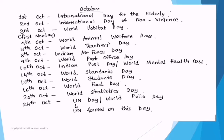October important dates: 1st October — International Day of the Elderly. 2nd October — International Day of Non-Violence. 3rd October (or first Monday of October) — World Habitat Day. 4th October — World Animal Welfare Day. 5th October — World Teachers Day. 8th October — Indian Air Force Day. 9th October — World Post Office Day. 10th October — Indian Post Day or World Mental Health Day. 14th October — World Standards Day. 15th October — World Students Day. 16th October — World Food Day (FAO headquartered in Rome, Italy — tell me FAO's full form in the comments). 20th October — World Statistics Day. 24th October — UN Day (UN formed 24th October 1945) and World Polio Day.